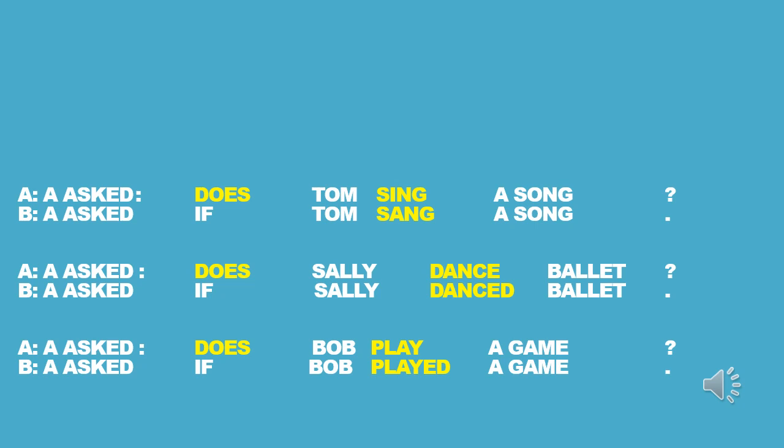More examples with verb to do. 'A asks: Does Tom sing a song?' Reported: 'A asks if Tom sang a song.' 'A asks: Does Tom sing a song?' — 'A asks if Tom sang a song.' 'A asks: Does Sally dance ballet?' — 'A asks if Sally danced ballet.' 'A asks: Does Tom play a game?' — 'A asks if Tom played a game.' B reports exactly what A had asked using reported questions with the verb to do.